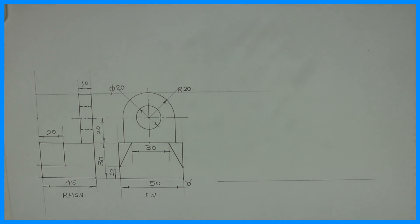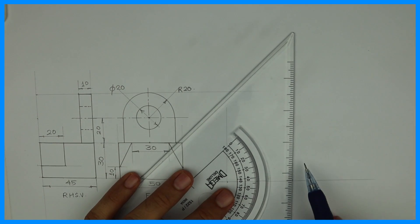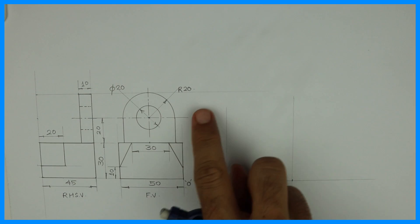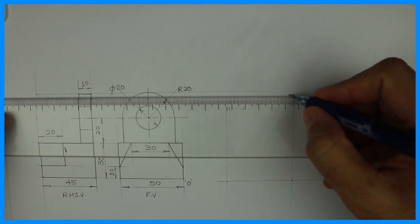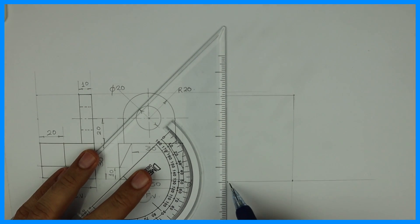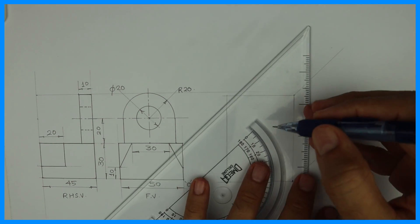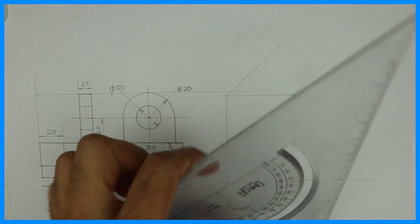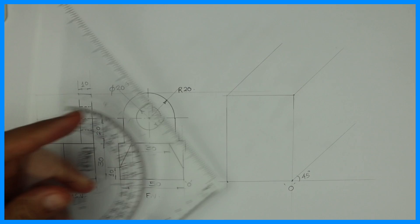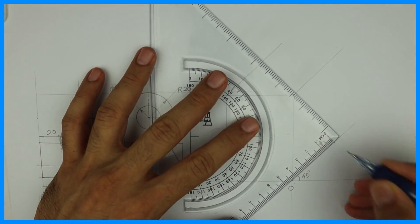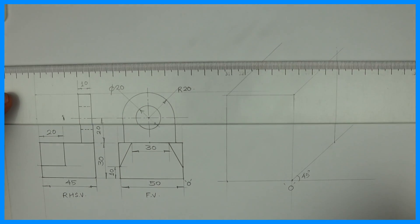First we will draw a box. The front view will come here, taking width 50. Height is 30 plus 20 plus 20, which is 70. From the origin on the right side, we take 45 degrees — you can also take 30 or 60 depending on the problem. Width is 45. So we are done with the box.